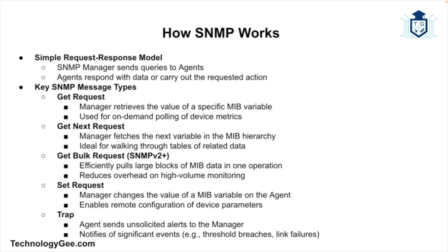SNMP operates using a simple request-response model. The SNMP manager sends requests to the agent, and the agent responds with the requested information or performs the specified action. The protocol uses five basic types of messages. The first is the Get Request, sent by the manager to retrieve the value of a variable from the agent. The second is the Get Next Request, similar to Get Request but retrieving the next variable in the Management Information Base.